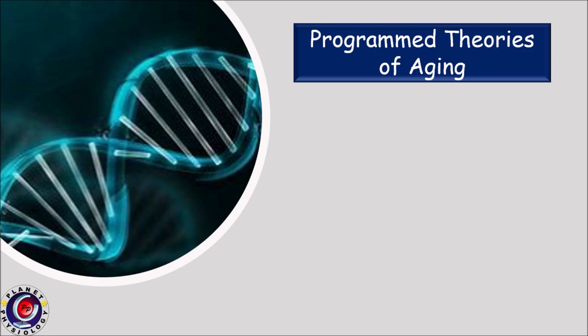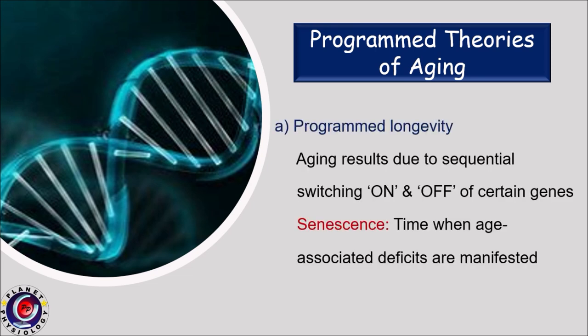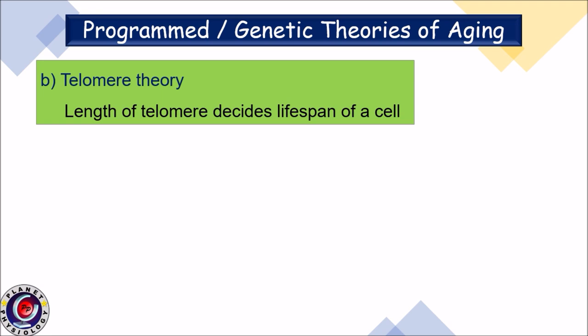Starting with genetic theories, the first is the programmed longevity theory. According to this theory, aging results from the switching on and off of certain genes, and the time when age-associated deficits are manifested is called senescence. The next important theory is the telomere theory, where the length of the telomere decides the life of a cell. This is a very important concept and we shall study it in detail.